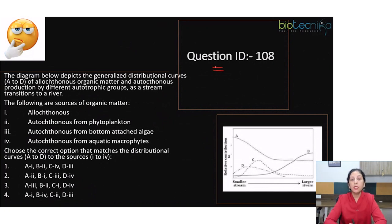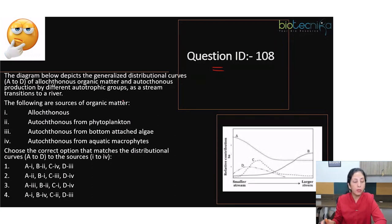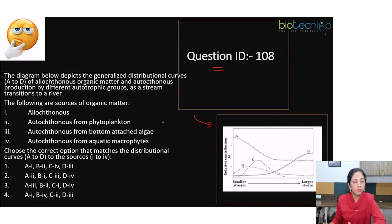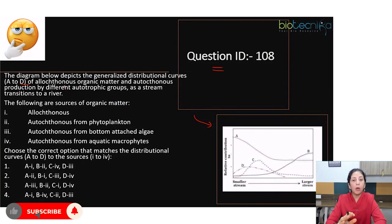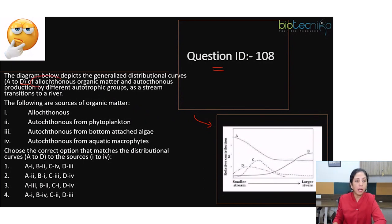Now let us move to question ID 108 — that was a very tricky question. A diagram has been given showing distributional curves A to D of allochthonous organic matter and autochthonous material. First of all, you must understand what we mean by these terms: allochthonous and autochthonous.